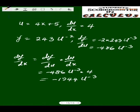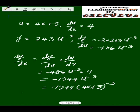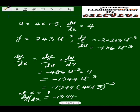Remember your u is 4x plus 5. So substituting for u here, we are going to have minus 1944 times (4x plus 5) raised to the power minus 3 at x equals 1. So dy/dx will be equal to, just substitute for x here. Wherever you see x, just put 1. So if I substitute for 1, it will be minus 1944 times (4 times 1 plus 5) raised to the power minus 3.